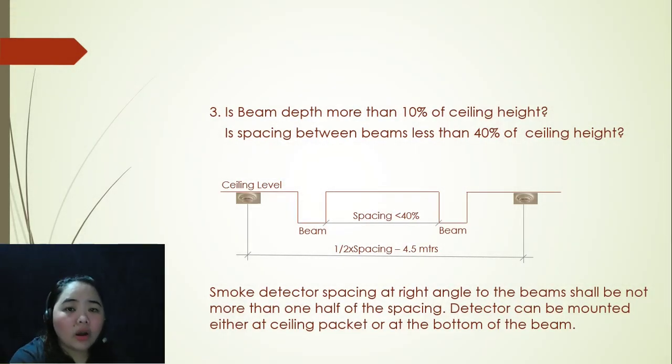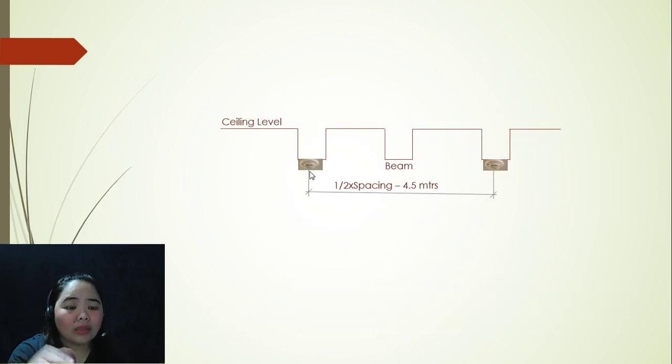Going to the third argument. This time we have, is beam depth more than 10% of ceiling height? Is spacing between beams less than 40% of ceiling height? If that's the case, it doesn't necessarily need it for you to put a smoke detector in each pocket. You can skip one pocket or two pockets for as long as you are meeting at least half of the requirement, which is 4.5 meters in distance or in spacing. Looking at the picture here in our slide, it can either be in your ceiling underside or at the bottom of your beam, still meeting the half of the requirement, but this time it's going to be 4.5 meters.